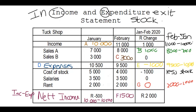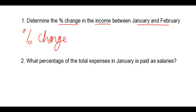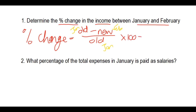Now that we've done the income and expenditure statement, let's look at questions they could ask. Determine the percentage change in income between January and February. When looking for percentage change, the formula is: the old amount minus the new amount, divided by the old amount, multiplied by 100. So that's January minus February, divided by January, multiplied by 100.